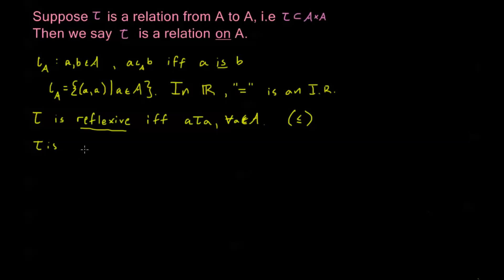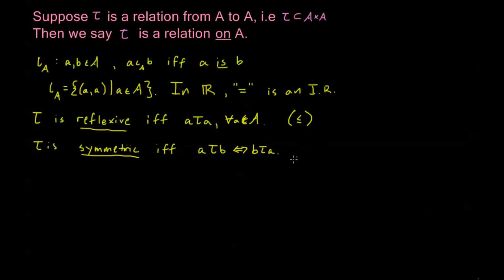Tau is called symmetric if and only if A tau B implies that B tau A. This goes in both directions because B tau A then implies A tau B by the same argument. You could think of this as: if A tau B, that means the ordered pair (A, B) is in tau, and that means B tau A, so (B, A) is also in tau. This could also be thought of as tau being its own inverse — if tau equals its own inverse, then tau is symmetric.